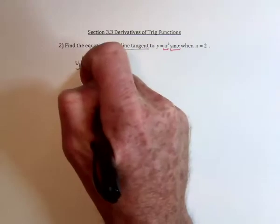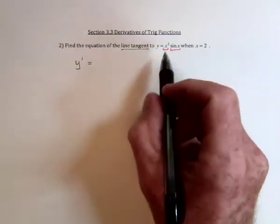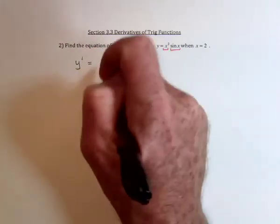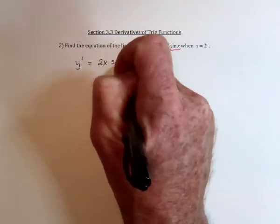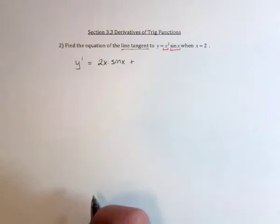So take the derivative of each one, but just one at a time. Take the derivative of x squared is 2x, and then leave the sine function alone, plus